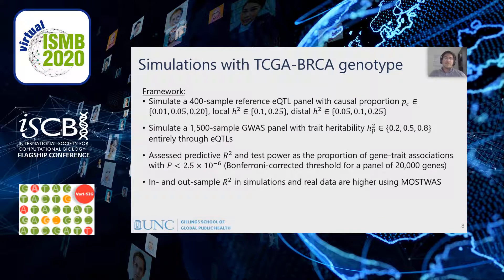We first conducted simulation analyses to compare MOSTWAS to local-only TWAS. We simulated a 400-sample reference eQTL panel with varied causal eQTL proportions as well as varied local and distal heritabilities on gene expression. Using these simulated eQTLs, we generated a continuous trait in a 1500-sample GWAS panel where the trait is generated entirely through these eQTLs and trait heritability is varied as well. We assessed predictive ability and TWAS power in these settings. In both simulations and real data applications, in- and out-of-sample predictive performance of MOSTWAS is considerably larger — approximately 1-2% additive increase in percent variance explained.